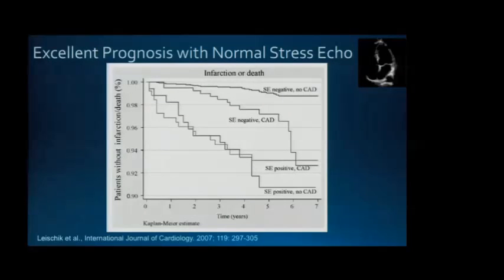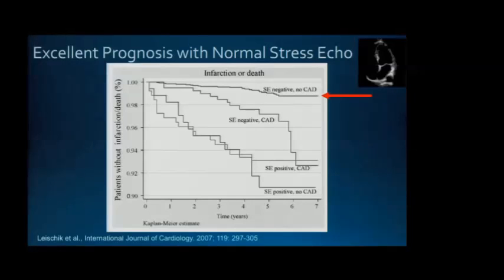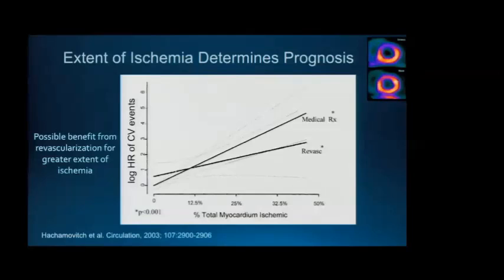With stress echo, patients can be stratified according to risk of MI or death over five to seven years. A normal stress echo with no CAD at baseline separates from patients with an abnormal echo. Importantly, a normal stress echo provides very accurate prognosis and reassurance — those with a negative stress echo had only about a one percent rate of MI or death over five years, demonstrating excellent prognosis associated with normal functional studies.